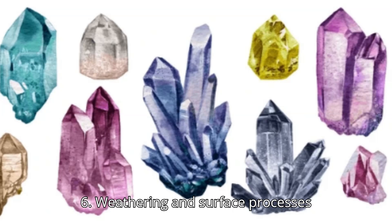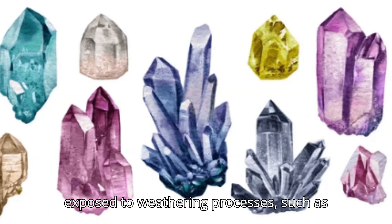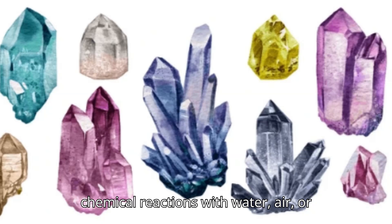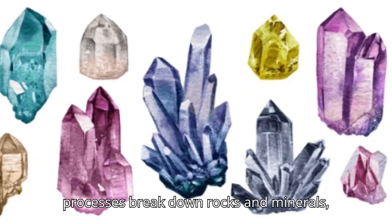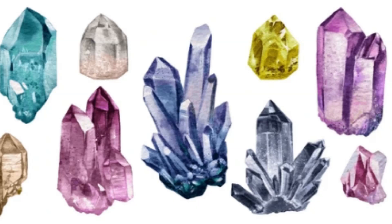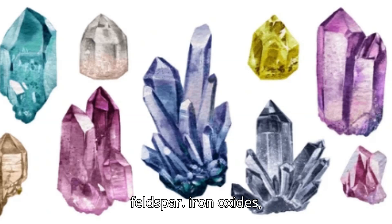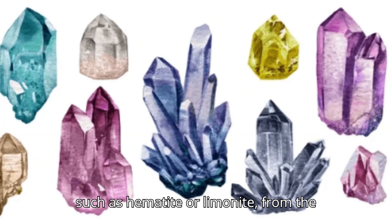6. Weathering and Surface Processes. At or near the earth's surface, rocks are exposed to weathering processes, such as chemical reactions with water, air, or organic materials. These processes break down rocks and minerals, sometimes forming new minerals like clay minerals from the weathering of feldspar, and iron oxides such as hematite or limonite from the oxidation of iron-rich minerals.